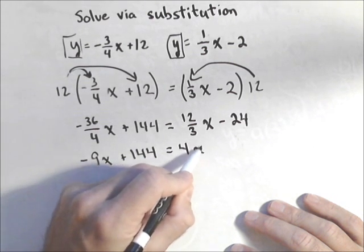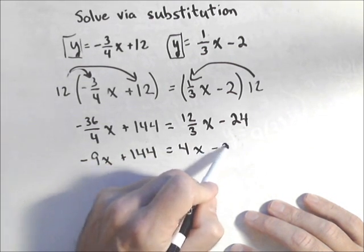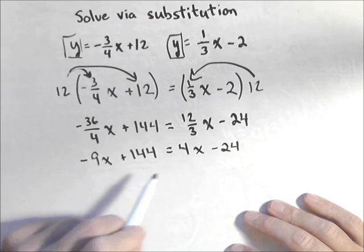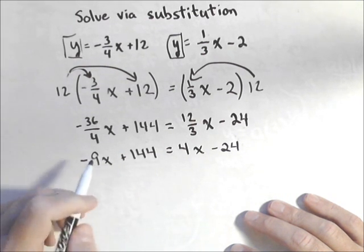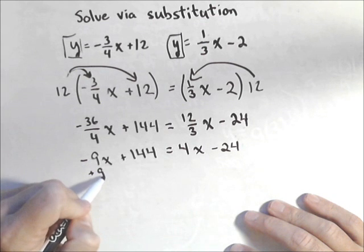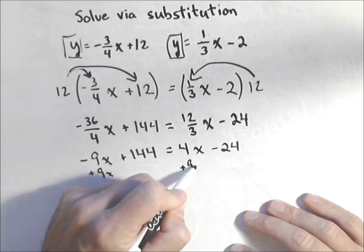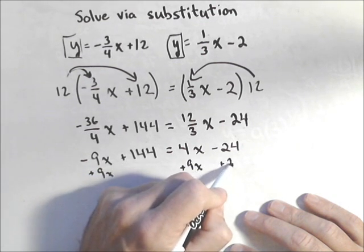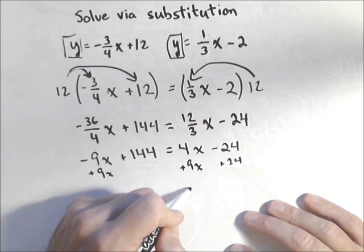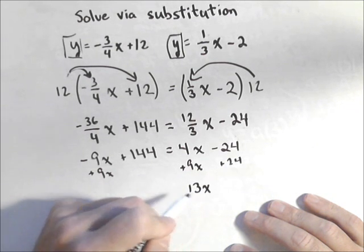Equals 4x minus 24, and we can now solve for x. So maybe I decide to add the 9x to both sides and add the 24 to both sides, so over here I'm going to have 13x.